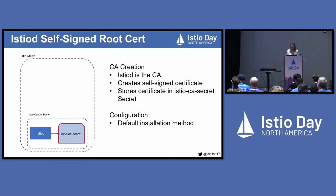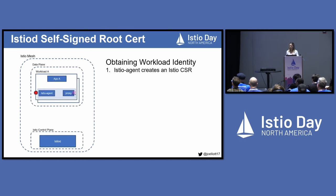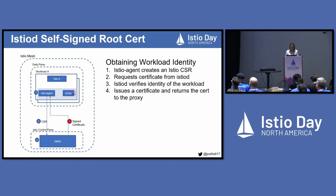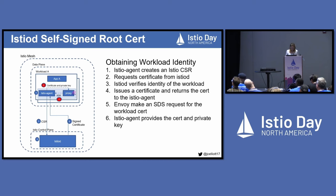Let's dive into our first solution. This is when Istio-D is functioning as the certificate authority. It creates a self-signed certificate on startup and stores it in a Kubernetes secret called the Istio CA secret. This is the default configuration — if you install Istio and provide no other configuration, this is what you'll get. Istio agent creates a certificate signing request and sends it to the control plane. Istio-D verifies the identity of that workload and issues a certificate if successfully verified, returning it to the proxy. Envoy then makes a request for the workload certificate, and Istio agent provides that cert and private key to Envoy for its configuration.